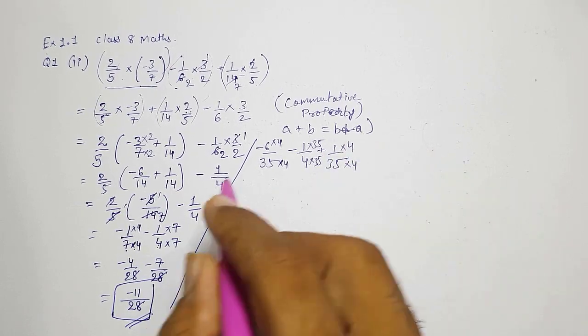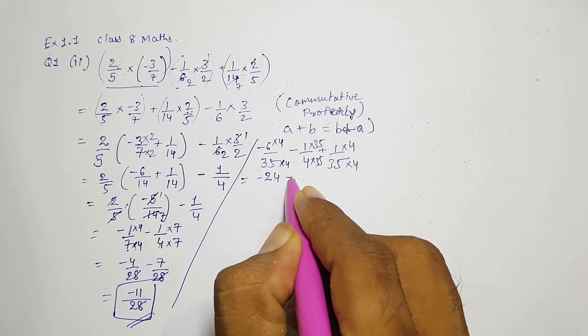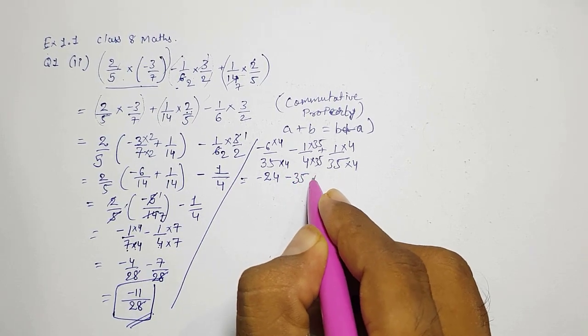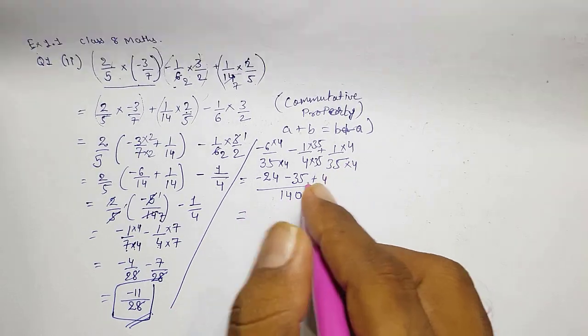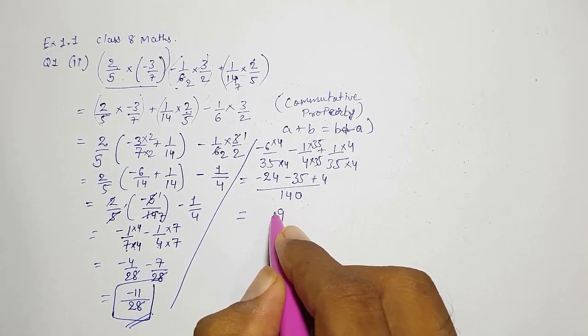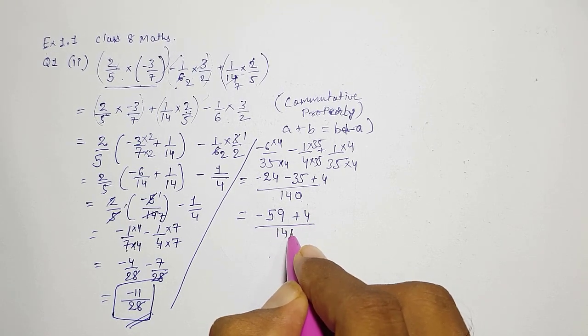So directly into 4 into 4 into 35 into 35. To make the denominator same we need to find out the LCM of these three terms: minus 24 minus 35 plus 4 by 140. So here you will get minus 59 plus 4 by 140.